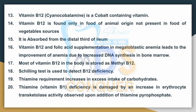Vitamin B12 is found only in food of animal origin and is not present in vegetable sources. It is absorbed from the distal third of ileum. Vitamin B12 and folic acid supplementation in megaloblastic anemia leads to improvement of anemia due to increased DNA synthesis in bone marrow. Most of the Vitamin B12 in the body is stored as methyl B12.